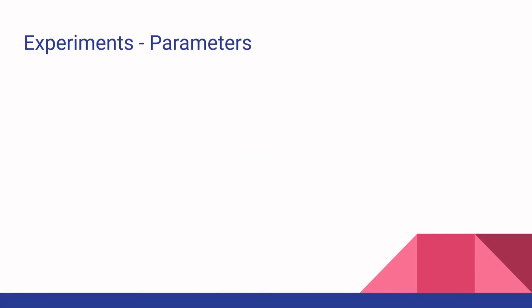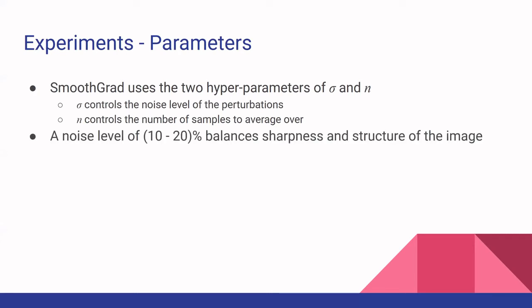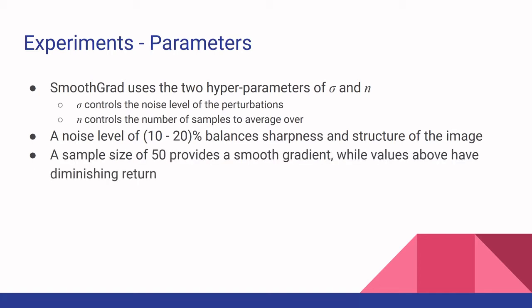In the SmoothGrad technique, there are two parameters. The first parameter is sigma, or the standard deviation, which controls the noise level of the perturbations. The second hyperparameter is n, which controls the number of samples to average over. The researchers found that a noise level of about 10 to 20 percent balances the sharpness and structure of the image, and about a sample size of 50 provided the smoothest gradient.